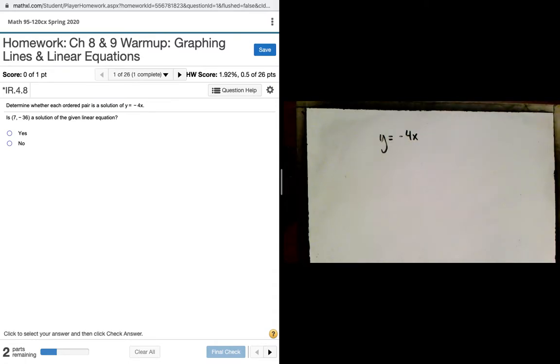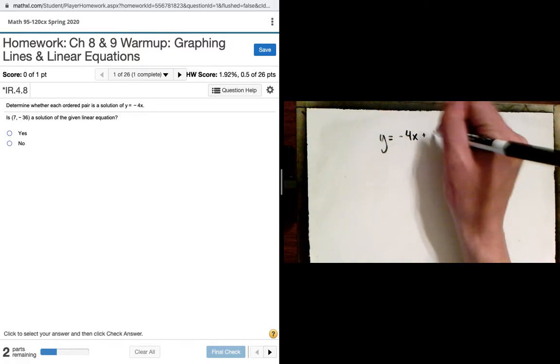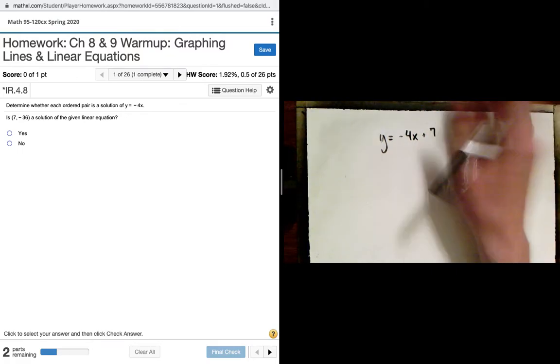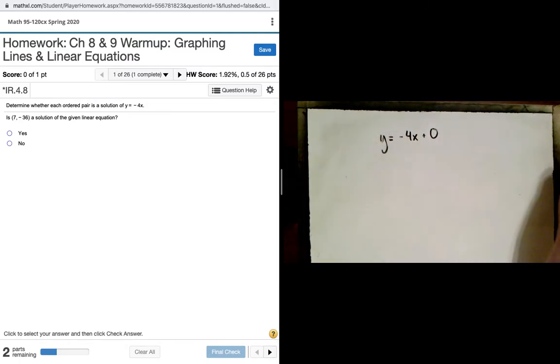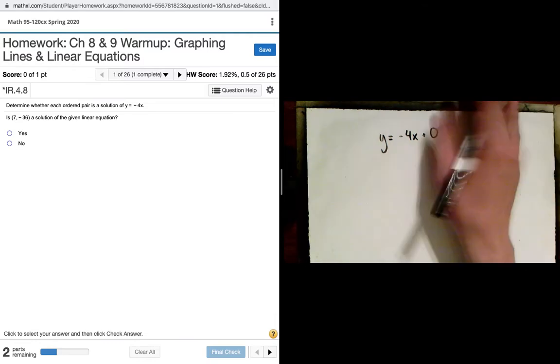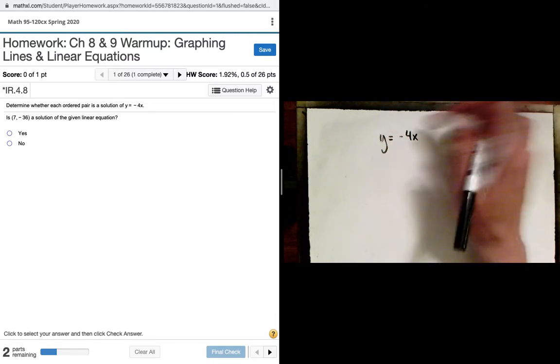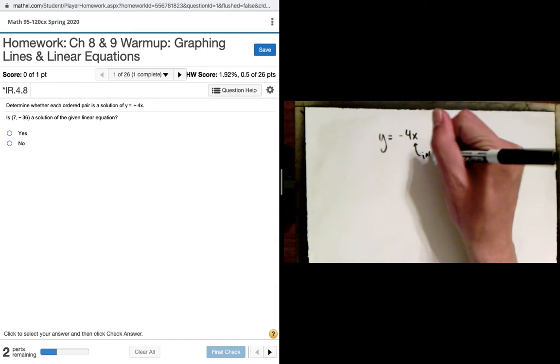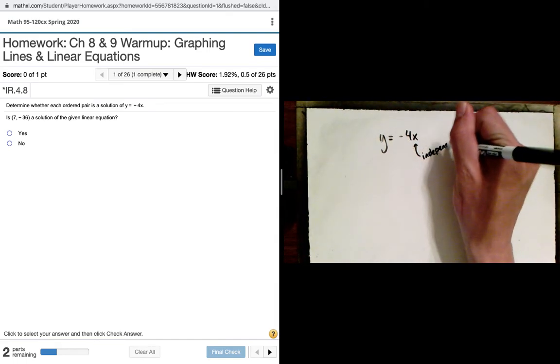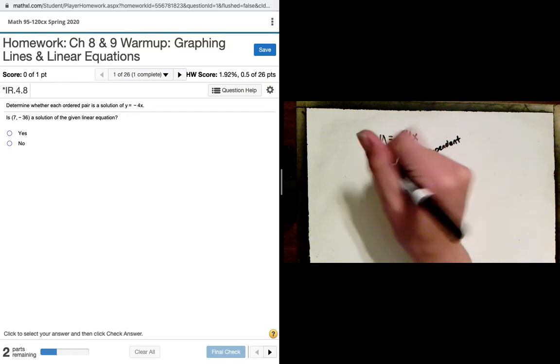So here we have a linear equation, y equals 4x. Usually we have some more stuff on it, right? Y equals 4x plus 7, or y equals 4x plus 2, or something like that. But it's like y equals 4x plus 0 right now, so we don't really need to put another value there. Still, the important things about this is we have an independent variable and we have a dependent variable.